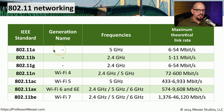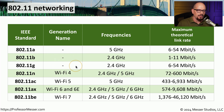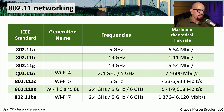The first three of these standards — 802.11a, b, and g — are rarely used today, and we did not formally assign a generation name to those, although you could colloquially refer to them as Wi-Fi 1, Wi-Fi 2, and Wi-Fi 3. The newer standards of Wi-Fi 4 through Wi-Fi 7 are covered through the standards of 802.11n through 802.11be.